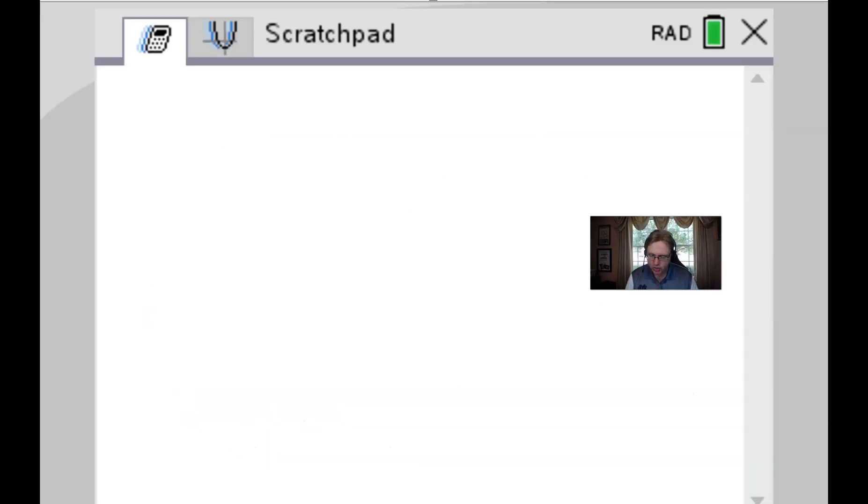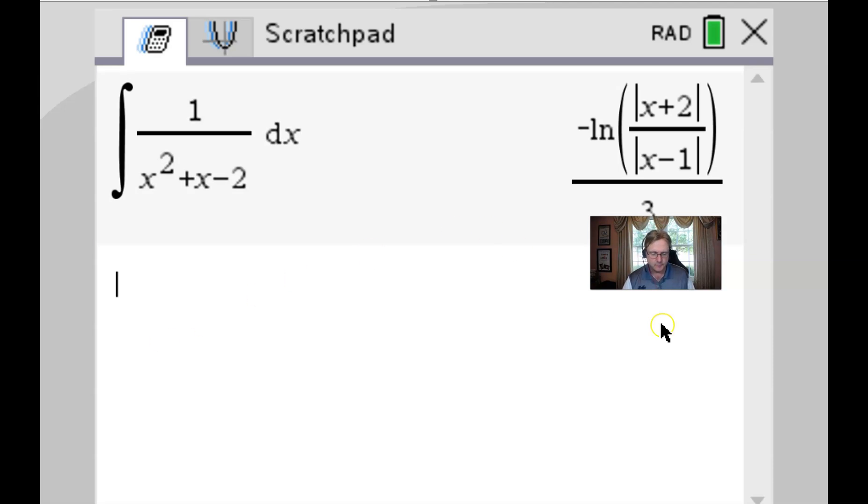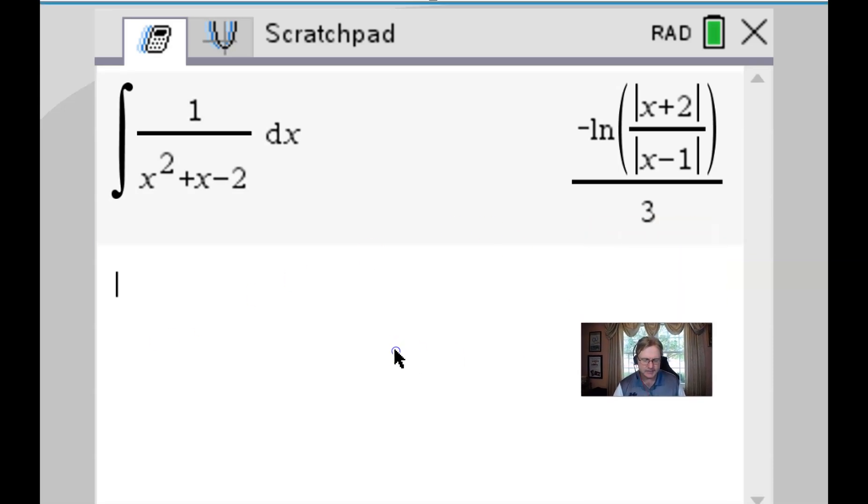Here we are with our graphing calculator program. Let's go ahead and throw in our shortcut for the integral, get rid of those boundaries, and throw in our fraction 1 over (x²+x-2) with respect to x. What we see for our answer is, wow, that looks just a little bit different. That looks not quite what we had. Let's move back into the document and compare our answers.